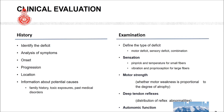For motor strength assessment, one important thing is to note whether the motor weakness is proportional to the degree of atrophy or wasting. If it is disproportionate — significant weakness without wasting — you have to suspect either upper motor pathology such as brain or spinal cord problem, or if it is a peripheral disorder, it has to be an acute onset one. For deep tendon reflexes, you have to look not only at the affected area but at the distribution of reflex abnormalities across the body and correlate with clinical findings.